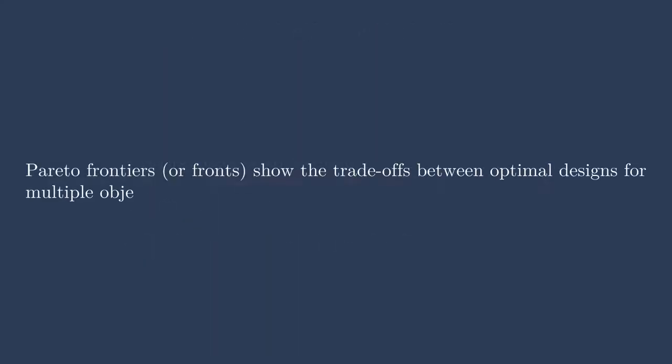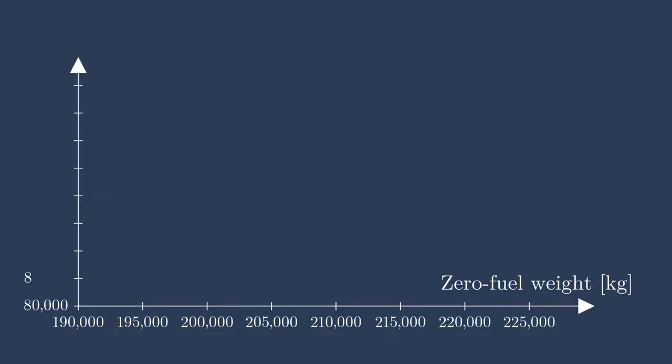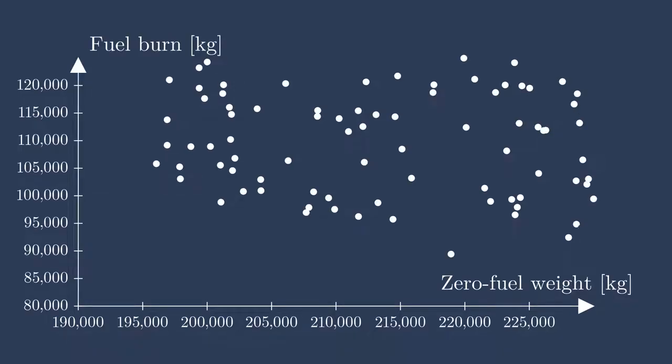They help show trade-offs between optimal designs for multiple objectives. Again, for all examples here, we'll just look at two objectives, but this can be extended into hyperdimensional space. Here is a plot of fuel burn versus zero fuel weight for an aircraft design problem. We might be trying to minimize both of these things simultaneously in a multi-objective setup. This means that we want to minimize the fuel burn for a given aircraft for a given mission, but also want to minimize the weight of the aircraft when there is no fuel inside of it.